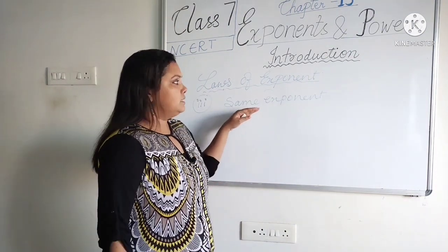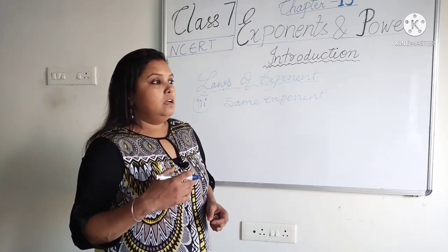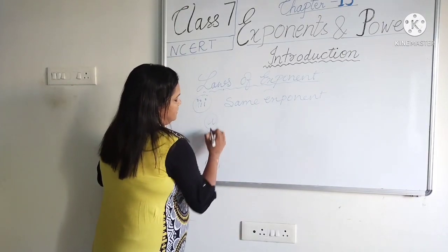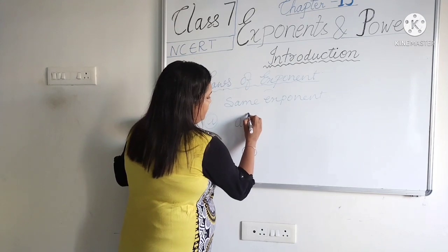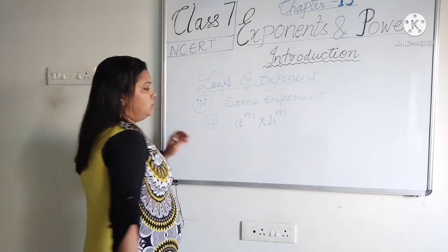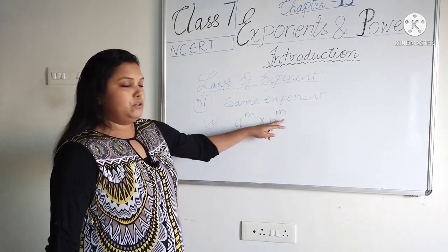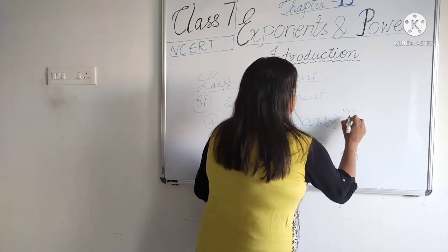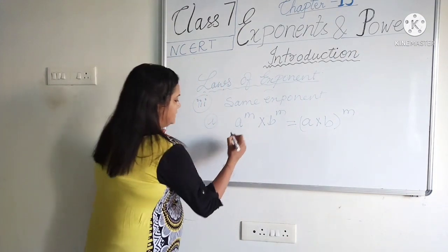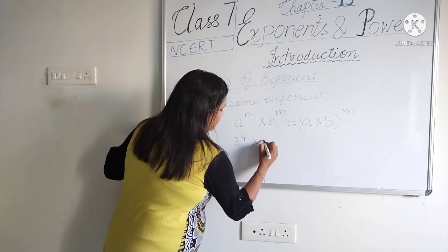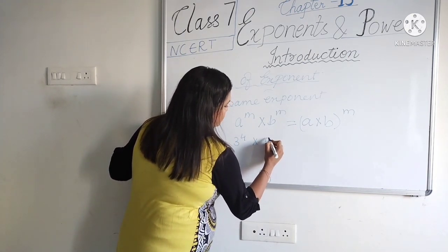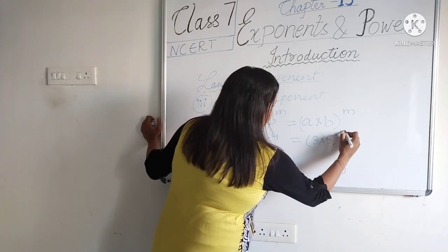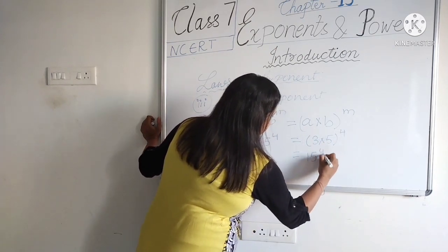The next law is about the same exponent with different bases. If you multiply: a^m × b^m = (a × b)^m. For example, 3 raised to the power 4 multiplied by 5 raised to the power 4 — since both have the same exponent, we multiply the bases: 3 × 5 = 15, giving 15 raised to the power 4.